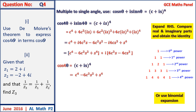Since the answer must be in terms of cos theta only, we use the identity sin squared theta equals 1 minus cos squared theta. After simplification, the final answer is cos 4 theta equals 8 cos to the power 4 theta minus 6 cos squared theta plus 1.